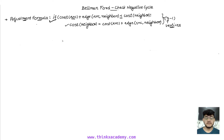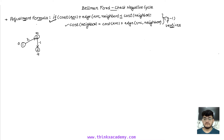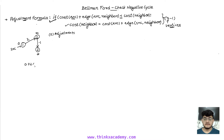Now let's look at a graph example to understand the negative cycle. We have three nodes: 1, 2, and 3. There's an edge from 1 to 2 with weight 2, and from 2 to 3 with weight negative one. Initially the costs are zero, infinite, infinite, with node 1 as the source. We need to apply the adjustment formula n minus one, so two times. In the first adjustment, starting from node 1 to 2: cost is zero plus two, which is less than infinite, so we reassign it to two.